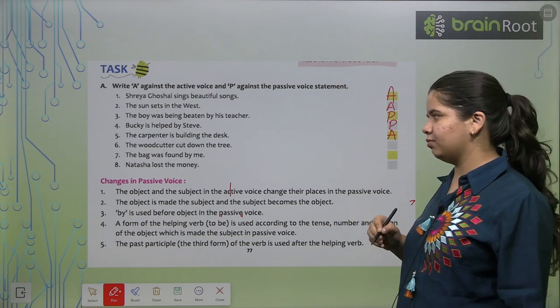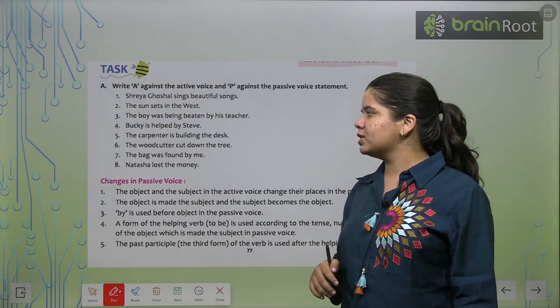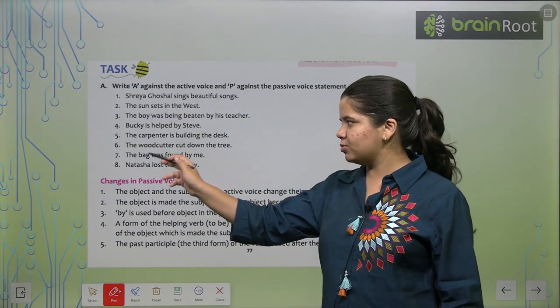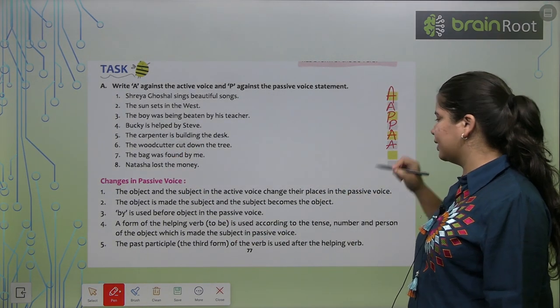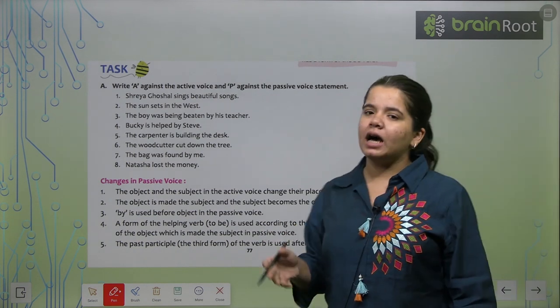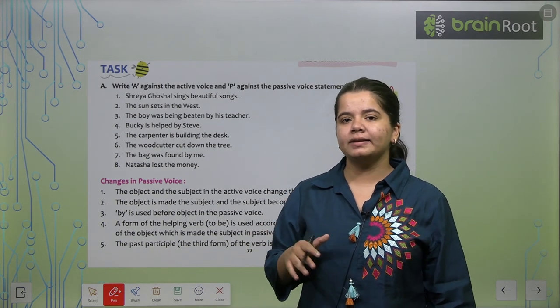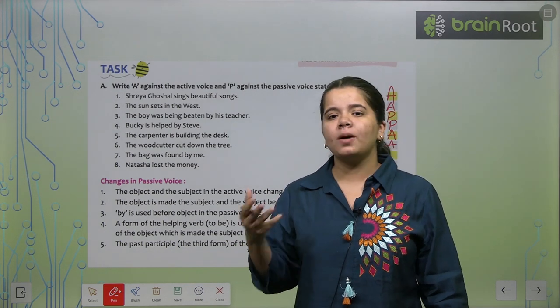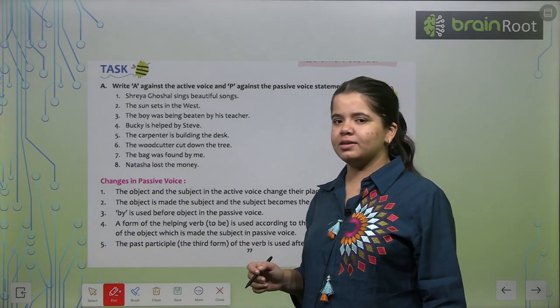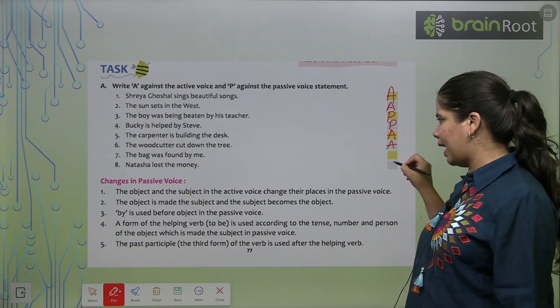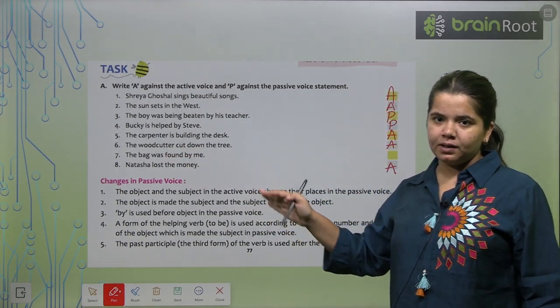The carpenter is building the desk. This is active voice because we have used direct words here. Nothing is said indirectly. Next, the bag was found by me. We have left the sixth one, first let's do that. The woodcutter cut down the tree. So this is also active. If it was written, the tree was cut down by the woodcutter, then we would call it passive voice. But right now it is absolutely active voice. Natasha lost the money. This is also active voice.